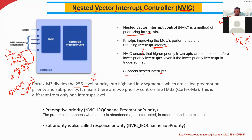There are two priority controls in STM32: preemption priority and sub-priority. This is different from having only one interrupt level — there can be multi-level interrupts. We will see more about sub-priority levels and priority levels when we talk about interrupts in the upcoming weeks.